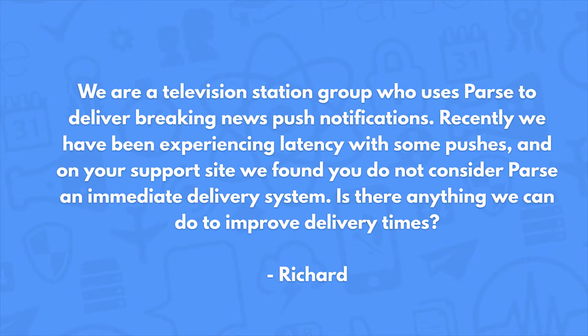We are a television station group who uses Parse to deliver breaking news push notifications. Recently we've experienced latency, and on your support site we found you do not consider Parse an immediate delivery system. Is there anything we can do to improve delivery times? The service Parse provides for push notifications depends on several other services. On iOS, we use Apple's push notification service; on Android, we use Google's cloud messaging service. Both of these are best effort — they don't guarantee immediate delivery, so we cannot ourselves guarantee immediate delivery.